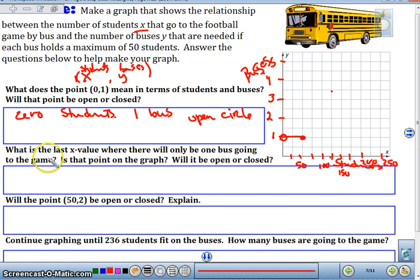So in this one it says, what is the last x value that will go on bus 1 to the game? That's when x equals 50, like we were just talking about. Is that a point on our graph? Yes, the point is located at (50, 1).